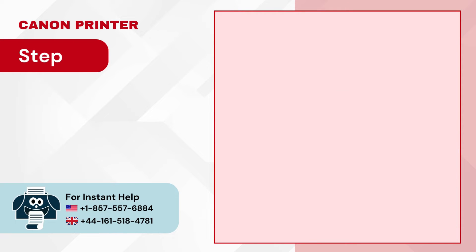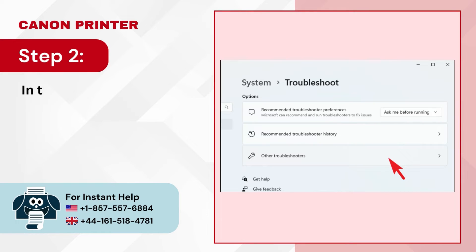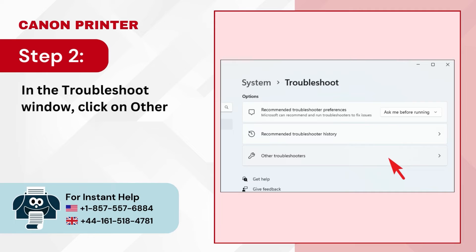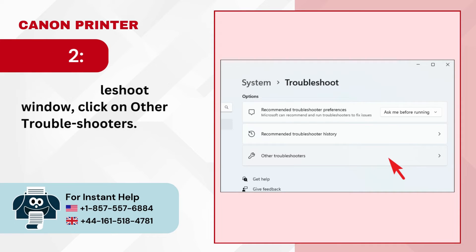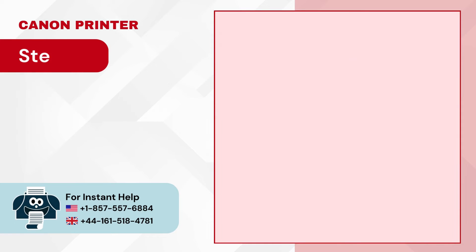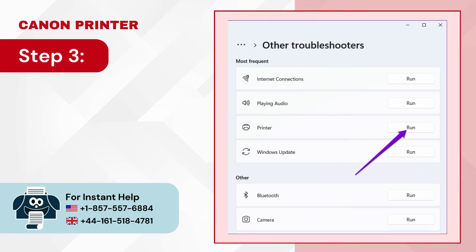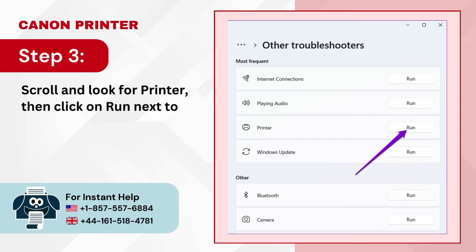Step 2 — In the Troubleshoot window, click on Other Troubleshooters. Step 3 — Scroll and look for Printer, then click Run next to it.